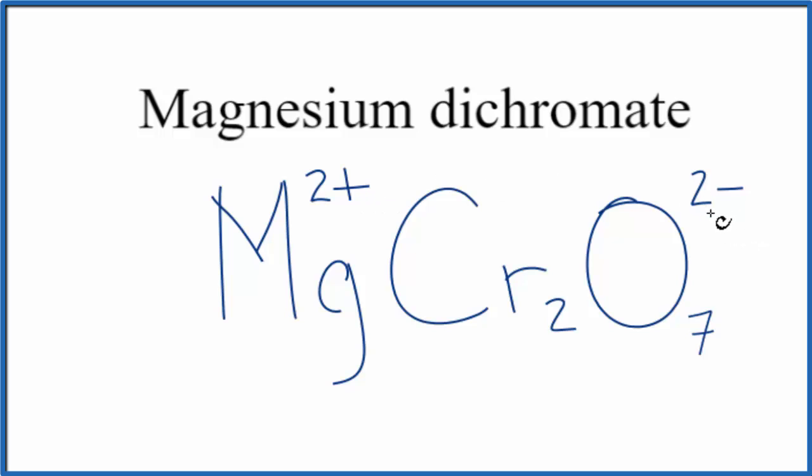2 plus, 2 minus, that gives us a net charge of zero. So this is the formula for magnesium dichromate.